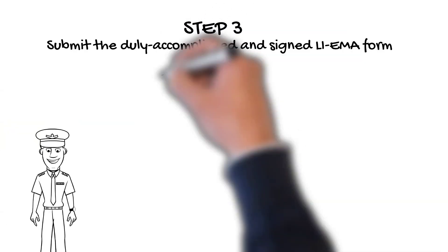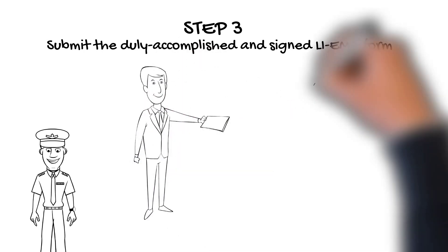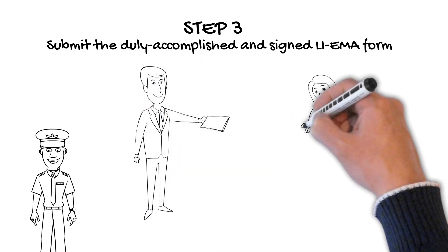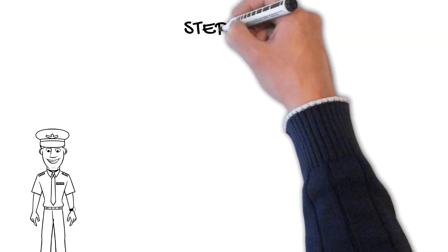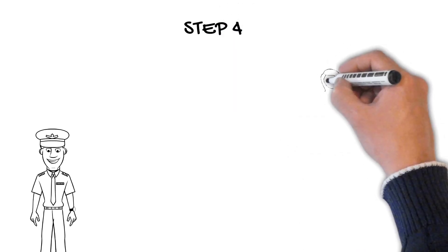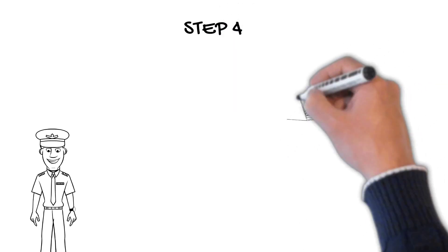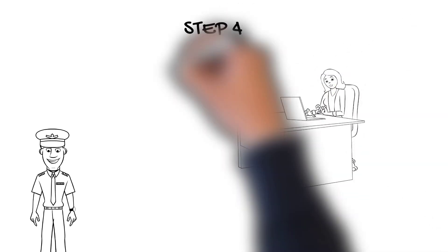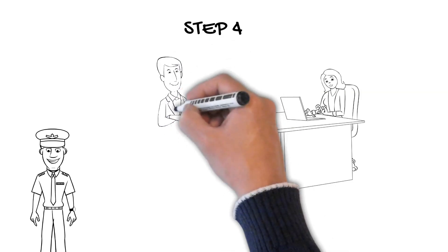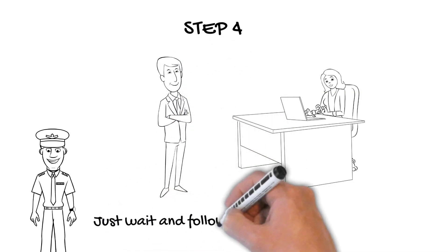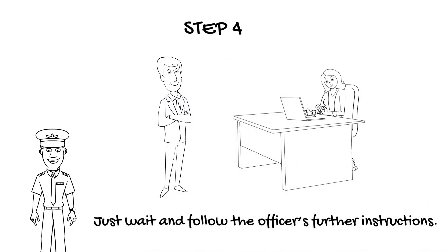Step 3: Submit the duly accomplished and signed LIEMA form to the officer. Step 4: He or she will now process the form and other documents, then will tell you the date of activation of your iAccess account. Just wait and follow the officer's further instructions.